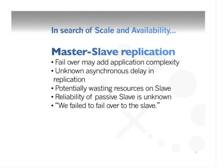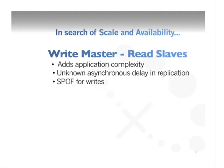The reliability of a slave server is unknown — you might hear 'we failed over and that failed.' You might have a write master and a read slave, adding to application complexity: the application has to know that writes go to this machine and reads go to those machines. You're still managing asynchronous replication delay and consistency problems between the two, and you still have a single point of failure for writes.